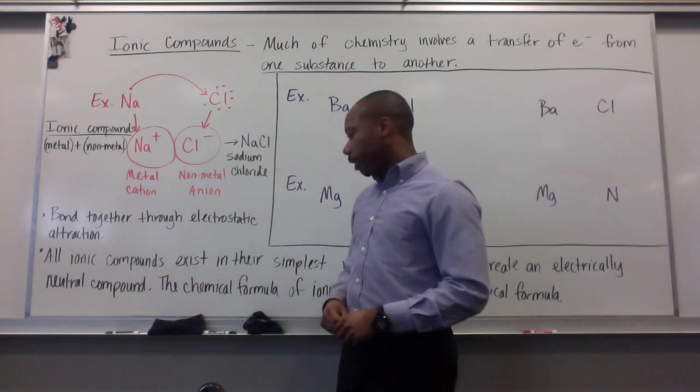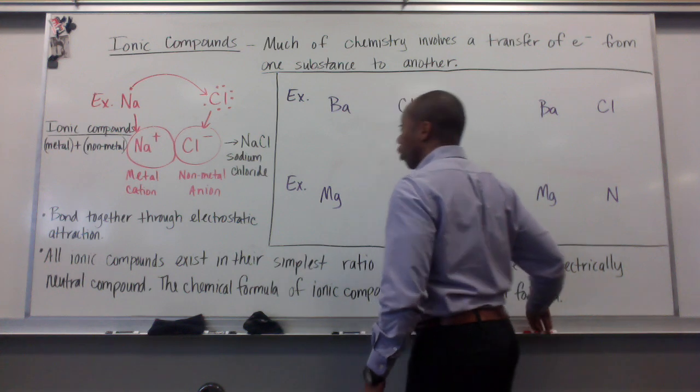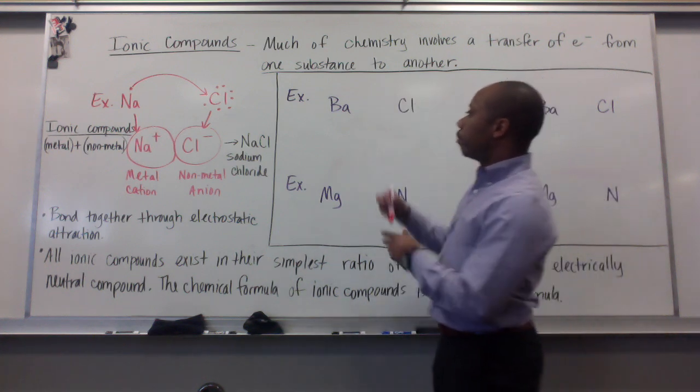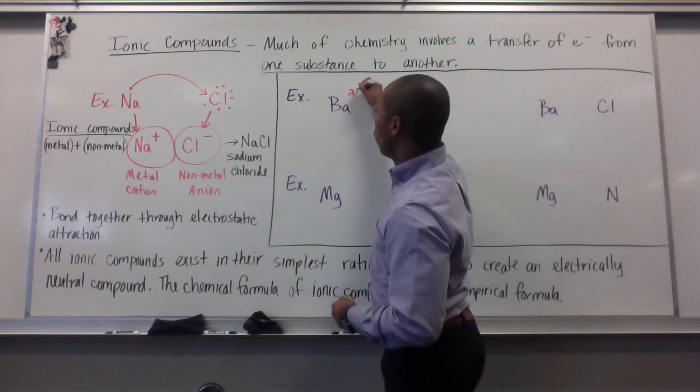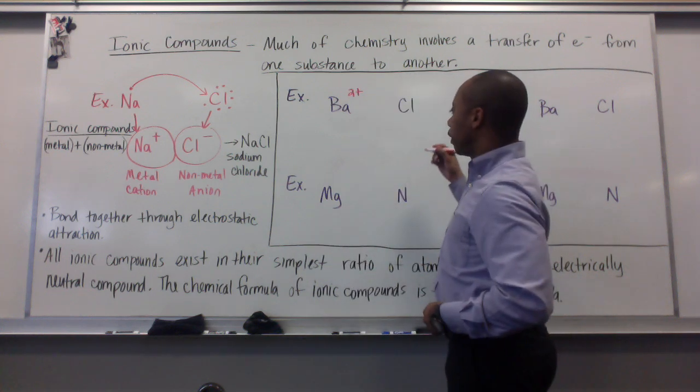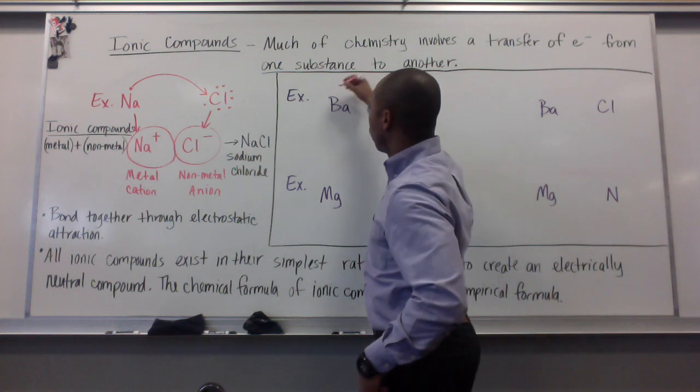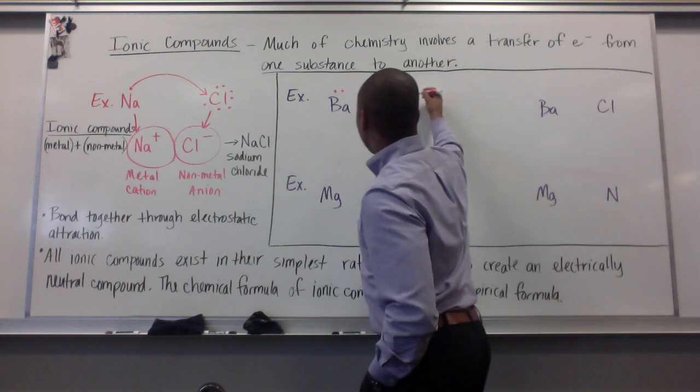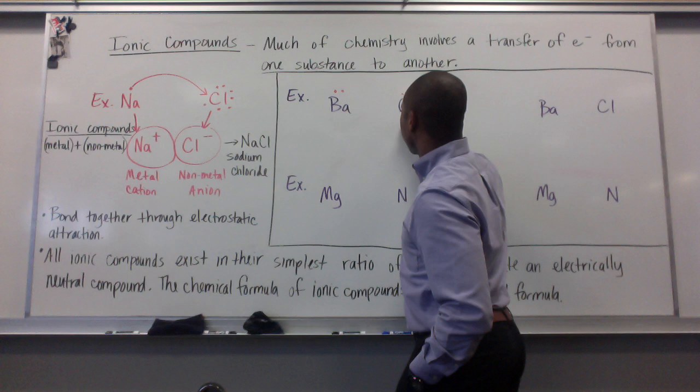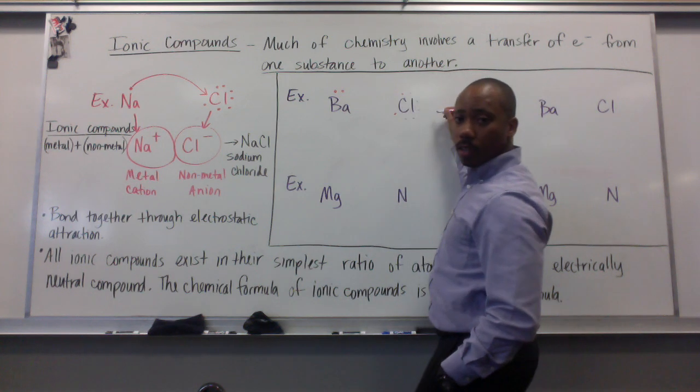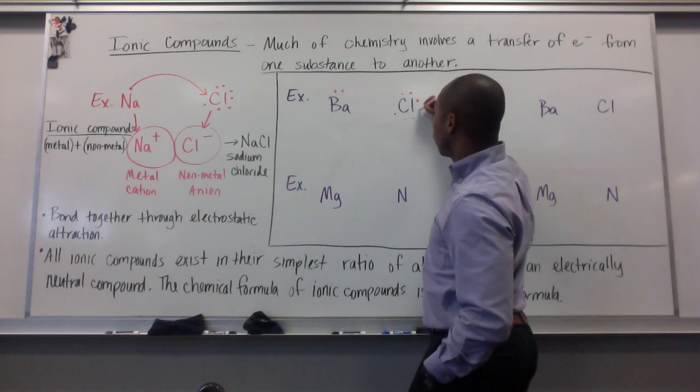Let's look at a few examples as we go through. Barium becomes barium two plus. We have barium with two valence electrons. Chlorine with one, two, three, four, five, six, seven valence electrons.